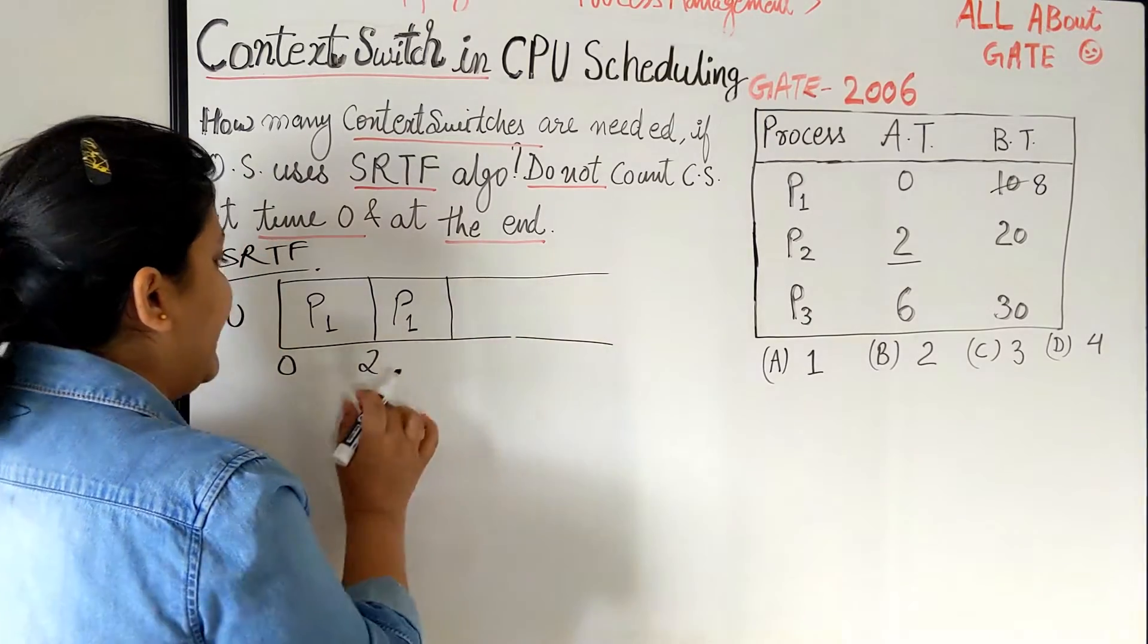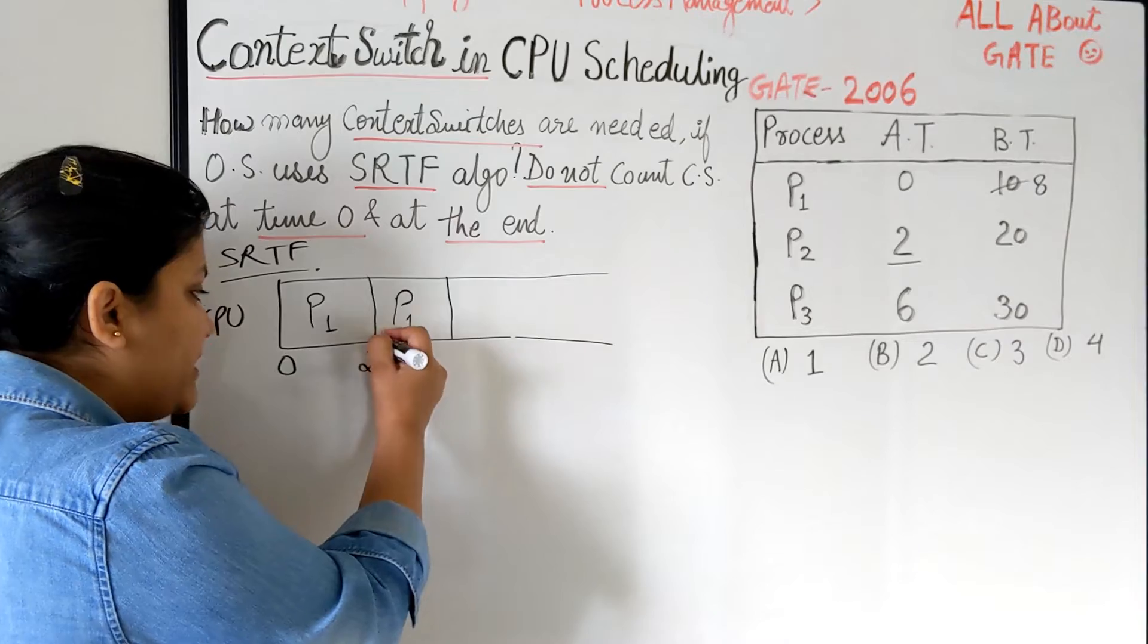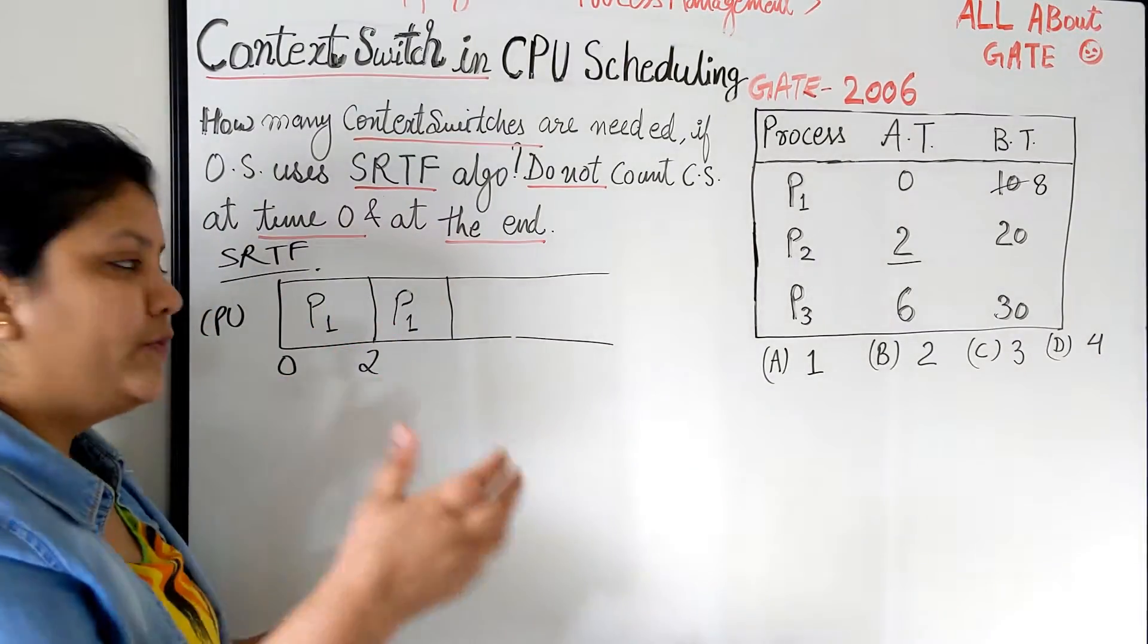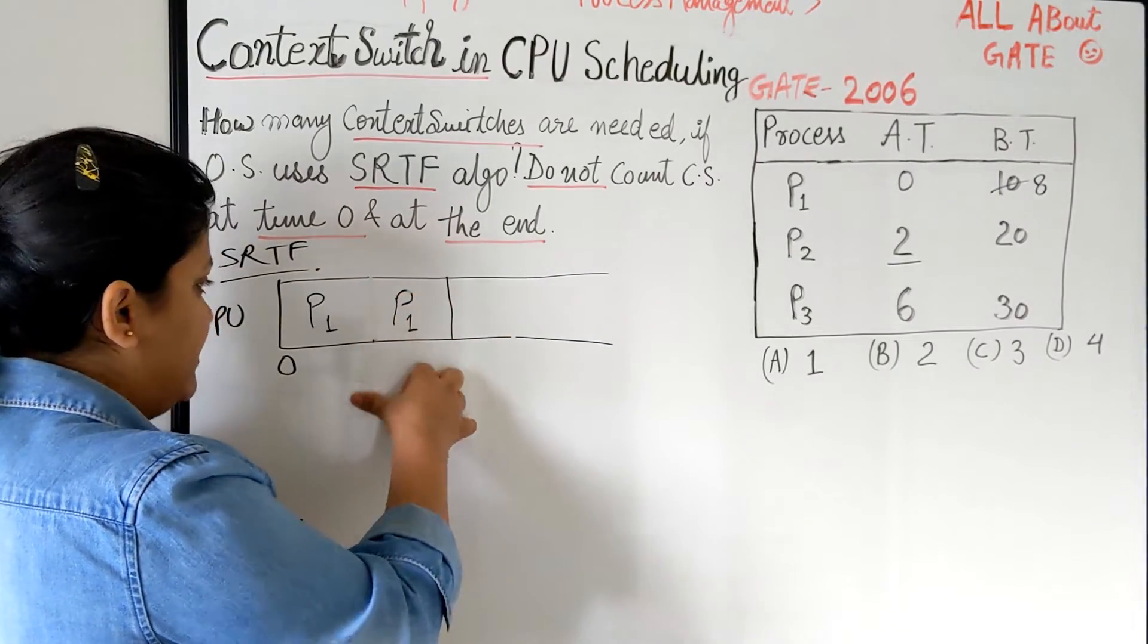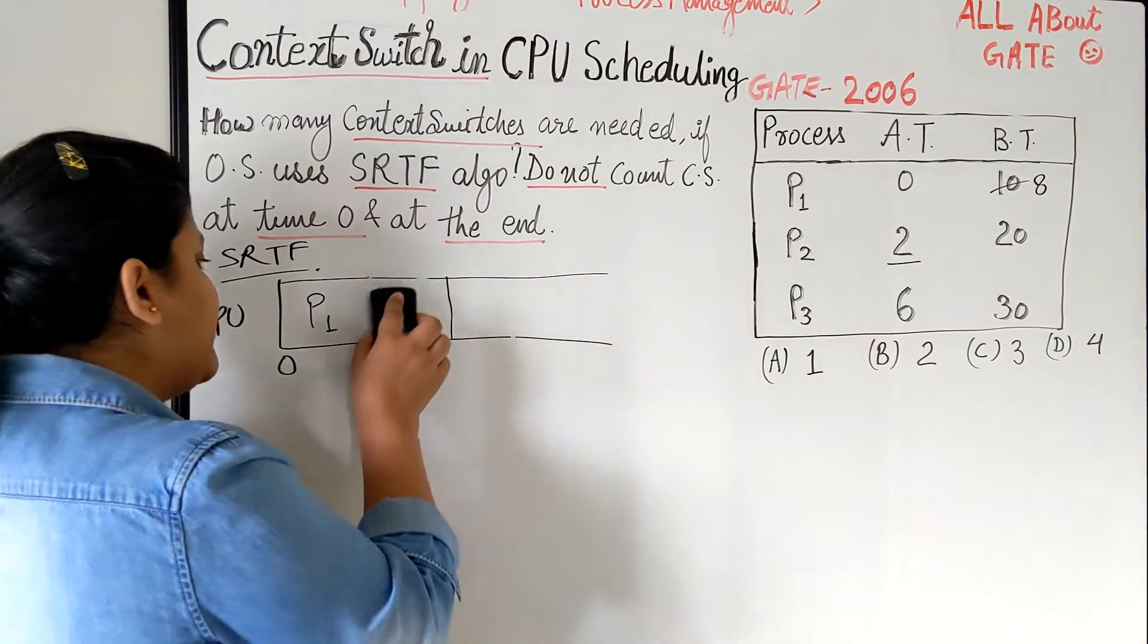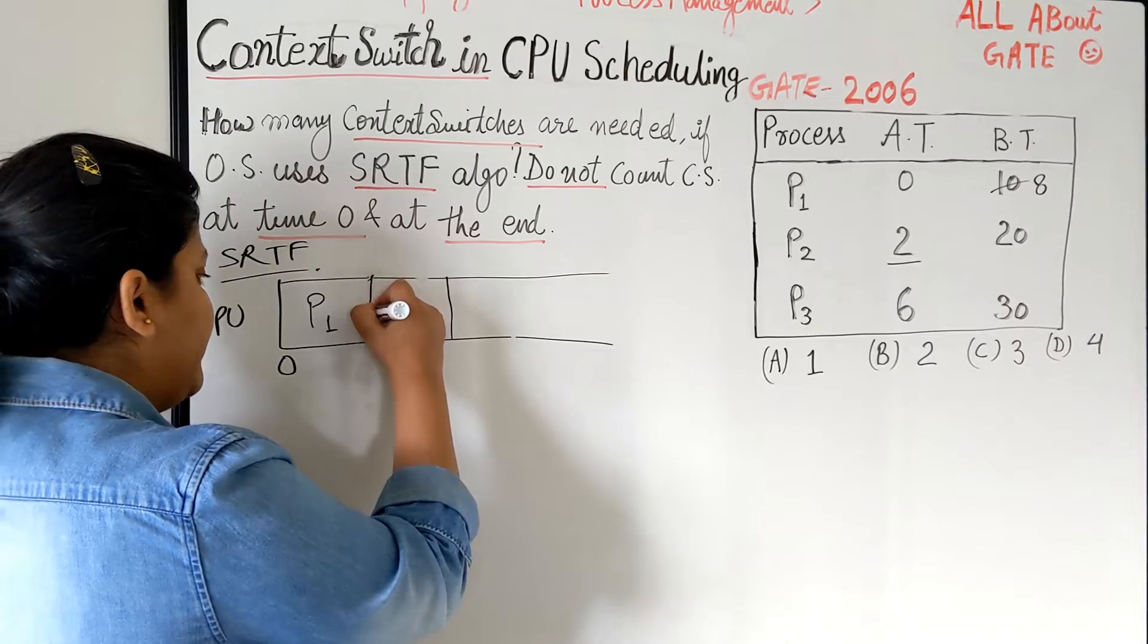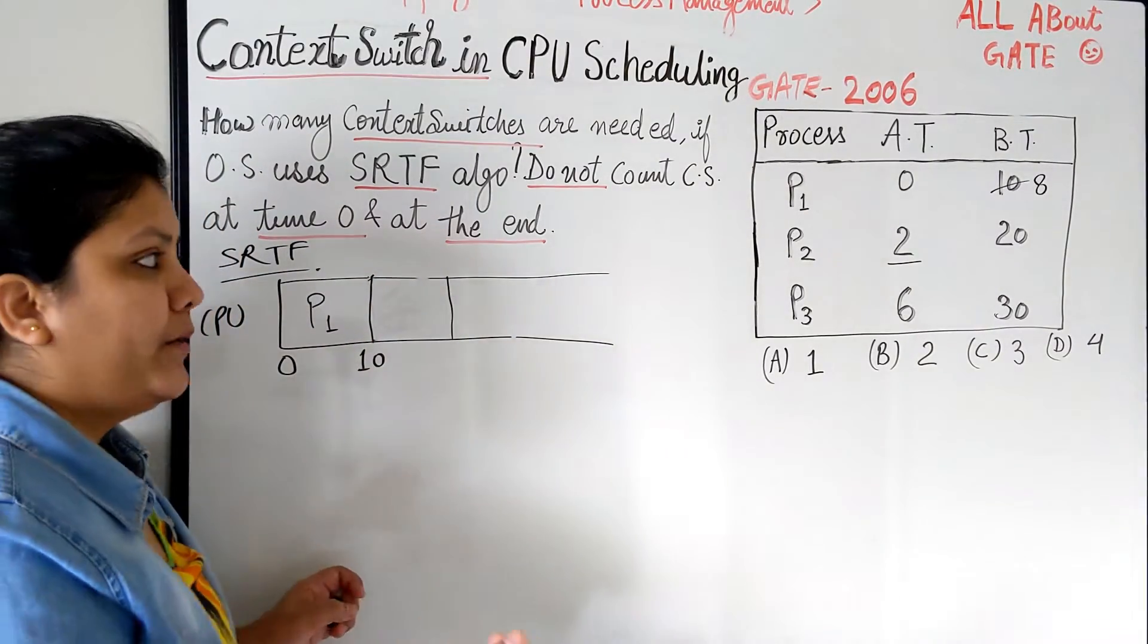Now everyone, for your understanding I am showing it in 2 time. But it is because the same process is continuing. So we cannot say that this is a context switch. In fact, now I can easily remove this. I will just take off this part also. So here until 10 my P1 is running.